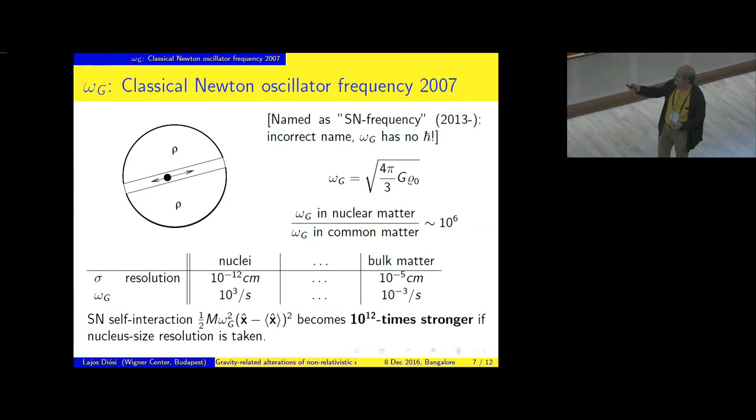I make a diameter tunnel through it, place a test body in it, push it slightly. It's well known from secondary school or first-year university studies that the potential is harmonic, so you get a harmonic oscillator. The frequency is omega g. That's completely classical. Now, omega g depends on rho_0. If I am in nuclear matter or in common matter, water density, then there is a one million factor in favor of nuclear matter.